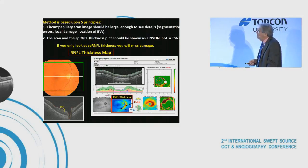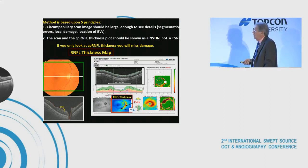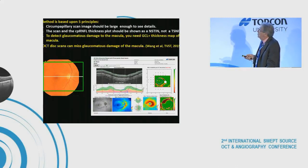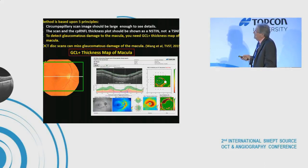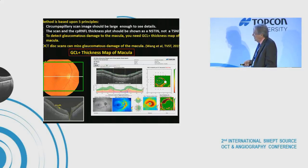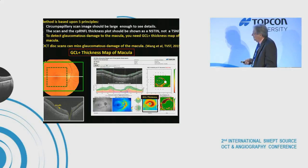If you only look at the retinal nerve fiber layer thickness, you're going to miss some macular damage. That's why we strongly advocate also looking at ganglion cells in the macula. We include a ganglion cell plus inner plexiform layer thickness map of the macula — showing this layer across the scan. Again, dark red is thick, dark blue is thin, with the foveal center visible.